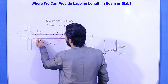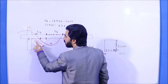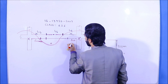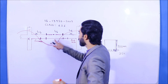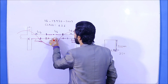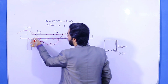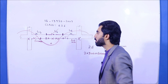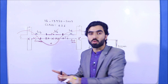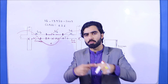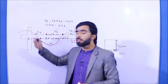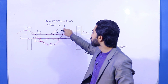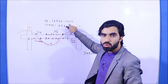So from the junction, you cannot provide lapping length. After 600 mm from the junction on either side, that is the zone where you can provide lapping length at the bottom. Also at the extreme bottom mid-span, you cannot provide lapping length. The valid zone is after 600 mm from each support side. This is confirmed in IS 13920:2003, clause 6.2.6.